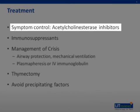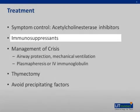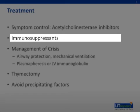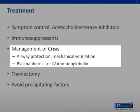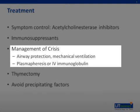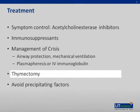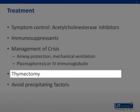Symptomatic control in MG is with acetylcholinesterase inhibitors, such as pyridostigmine. However, patients may need additional treatment in the form of immunosuppressants, such as prednisolone or other steroid-sparing agents, such as azathioprine or mycophenolate mofetil, to maintain remission of symptoms. In myasthenic crisis, where patients experience acute worsening particularly affecting bulbar and respiratory muscles, airway protection and ventilation is vital. Treatment with plasmapheresis or IV immunoglobulin have been shown to improve outcome. In patients with thymoma found on CT chest, thymectomy should be considered.